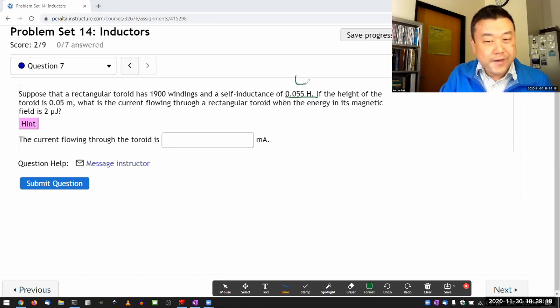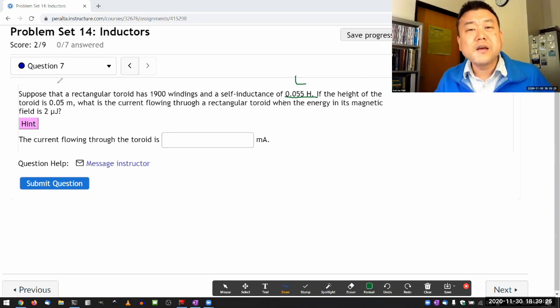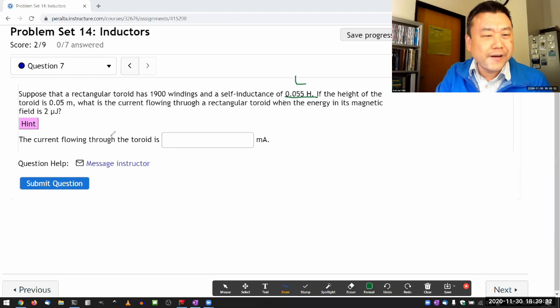If somehow you know that, that's all you need. In fact, I'm realizing that the question is not giving us the radius of the toroid, so it's not even a complete set of extra information anyway. And I have this amount of energy stored.